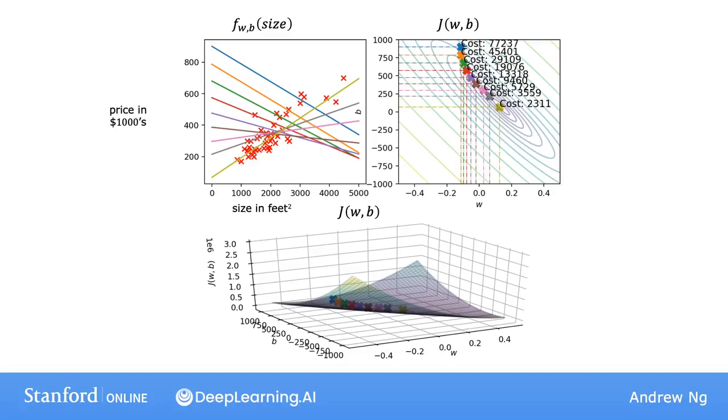The global minimum corresponds to this straight line fit, which is a relatively good fit to the data. Isn't that cool?